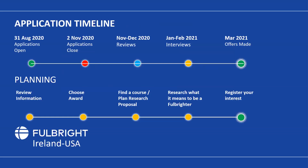In terms of the application process, applications have been open since the 31st of August and the deadline is 2nd of November. Reviews will take place November to December, and if you're shortlisted for interview, you'll be called during January to February. Offers will be made in March 2021. If you're applying this year, the earliest you'd go on your award is August 2021, though you can go later in the year if you choose.